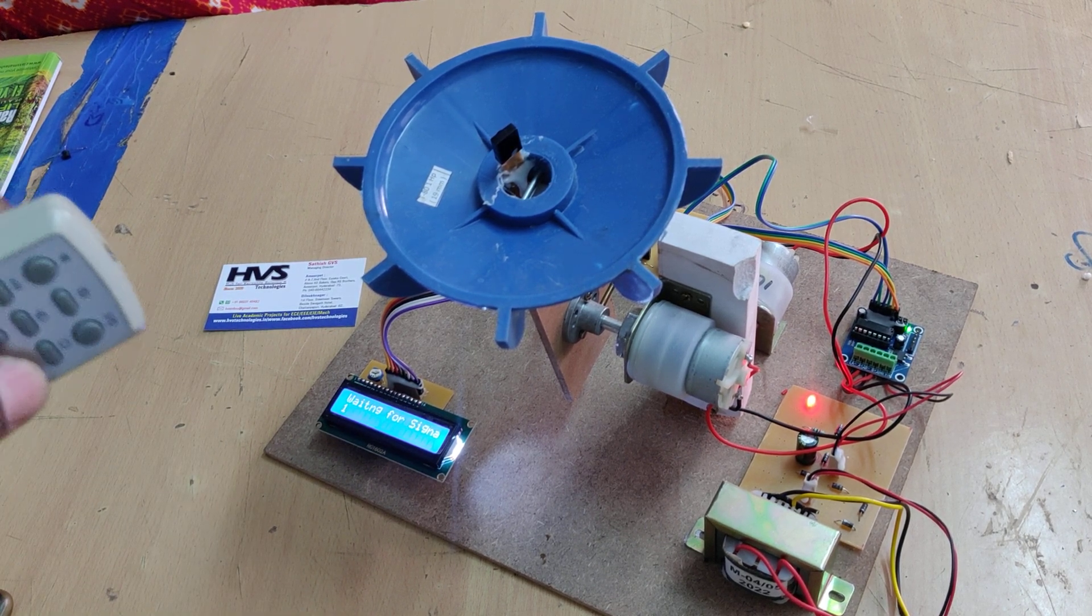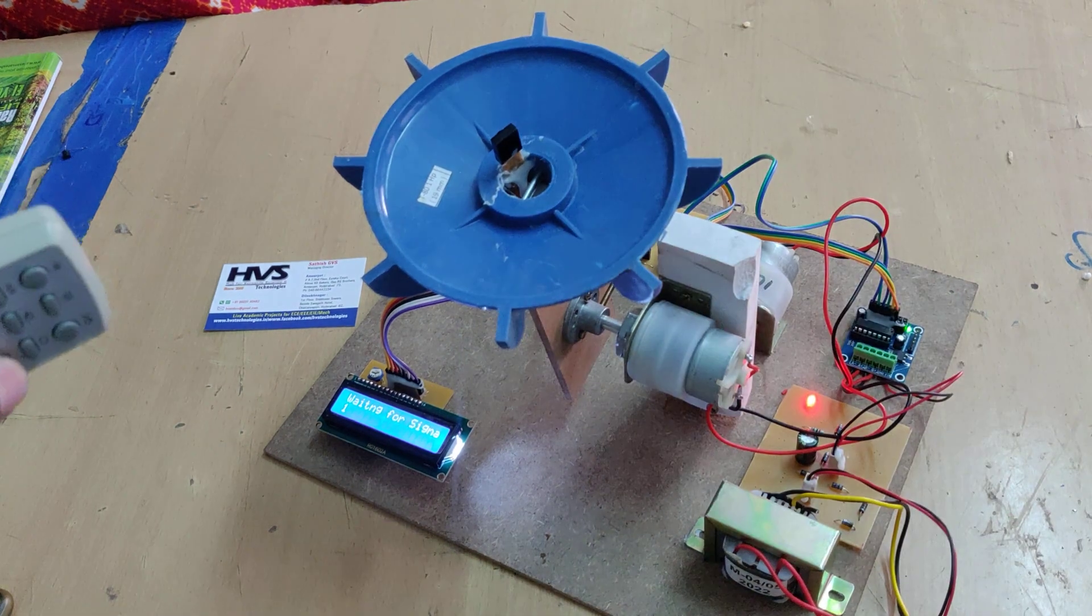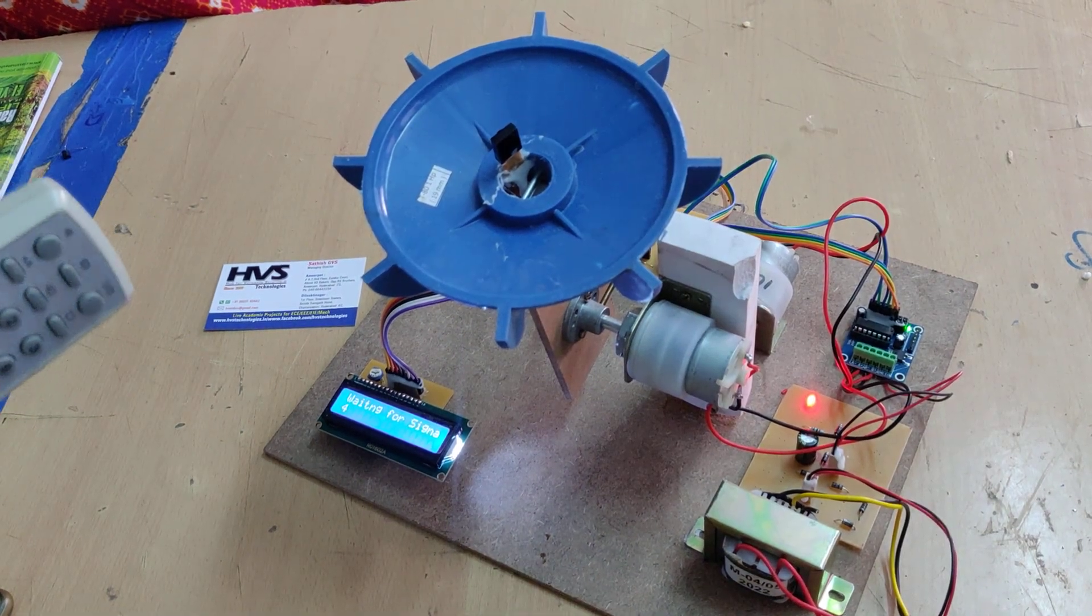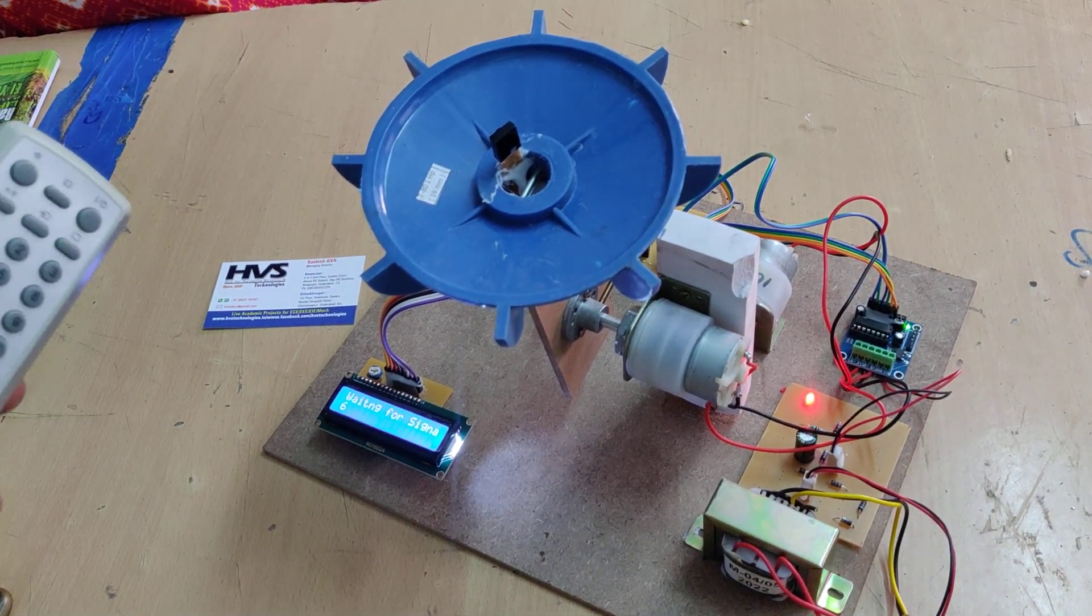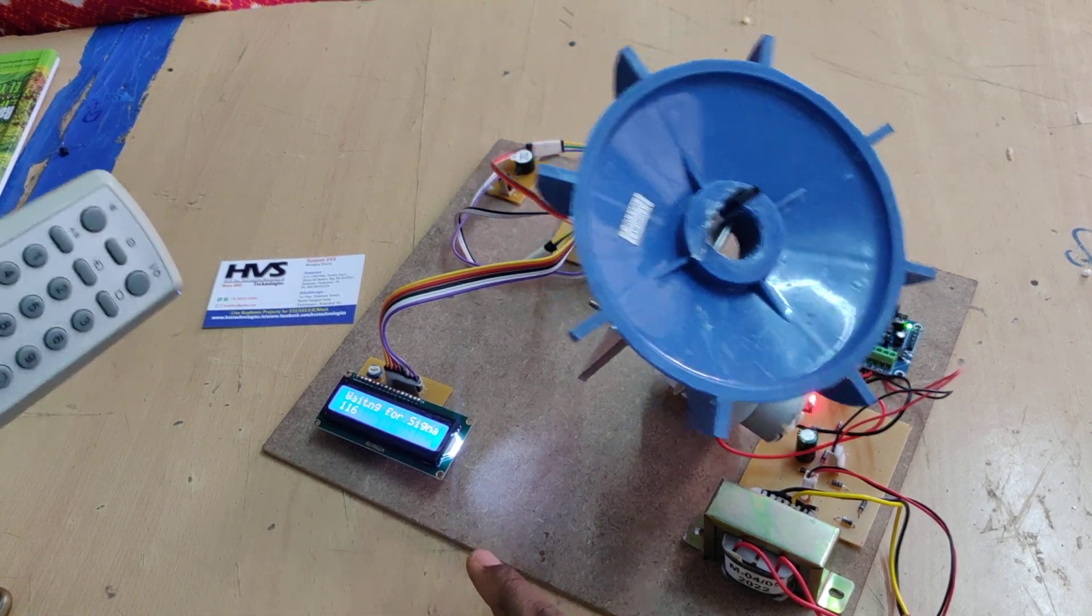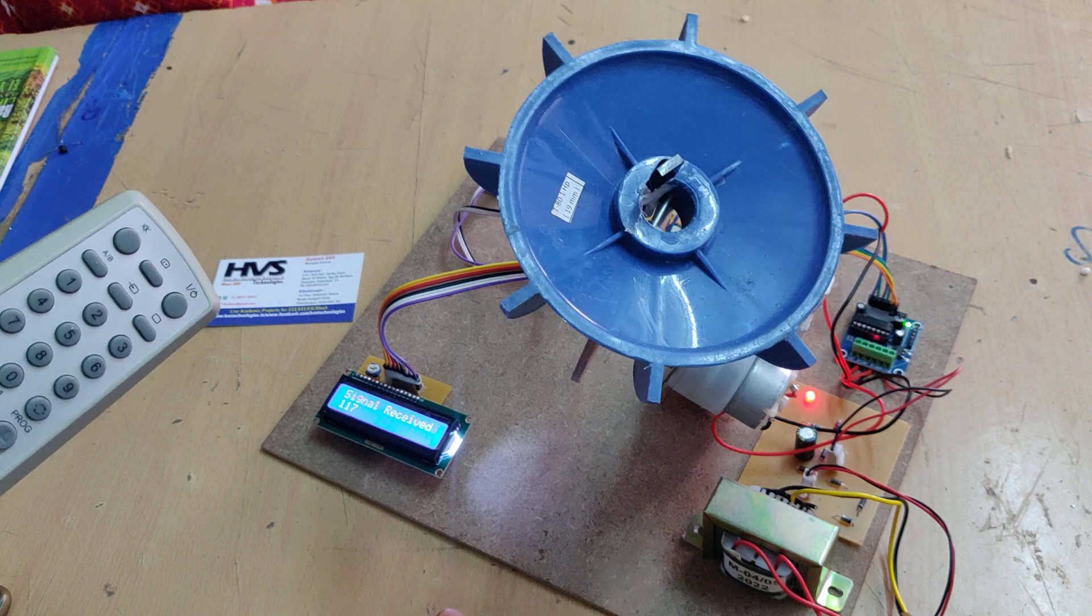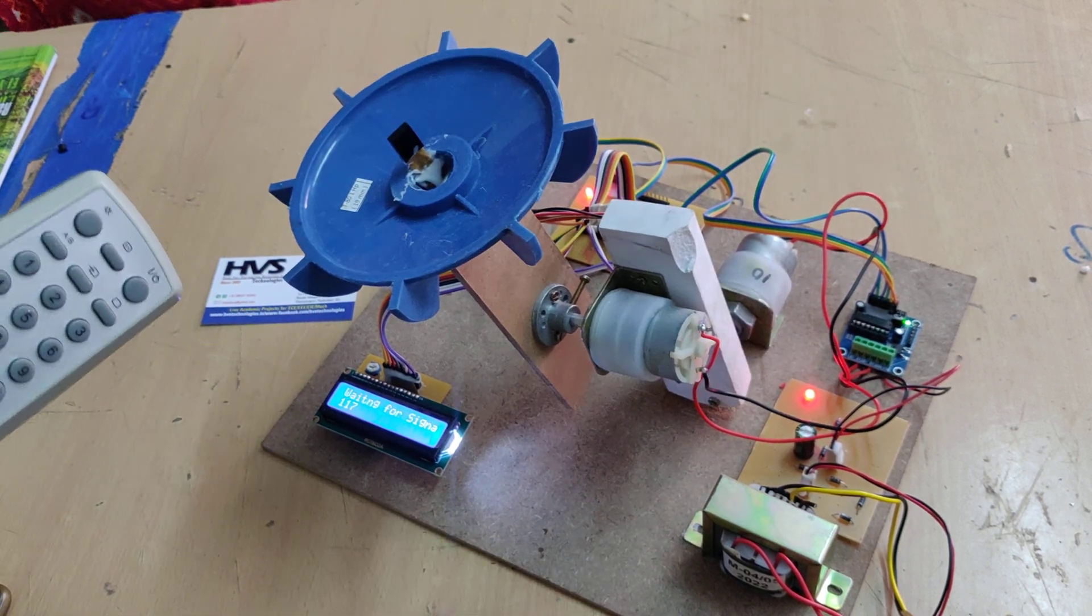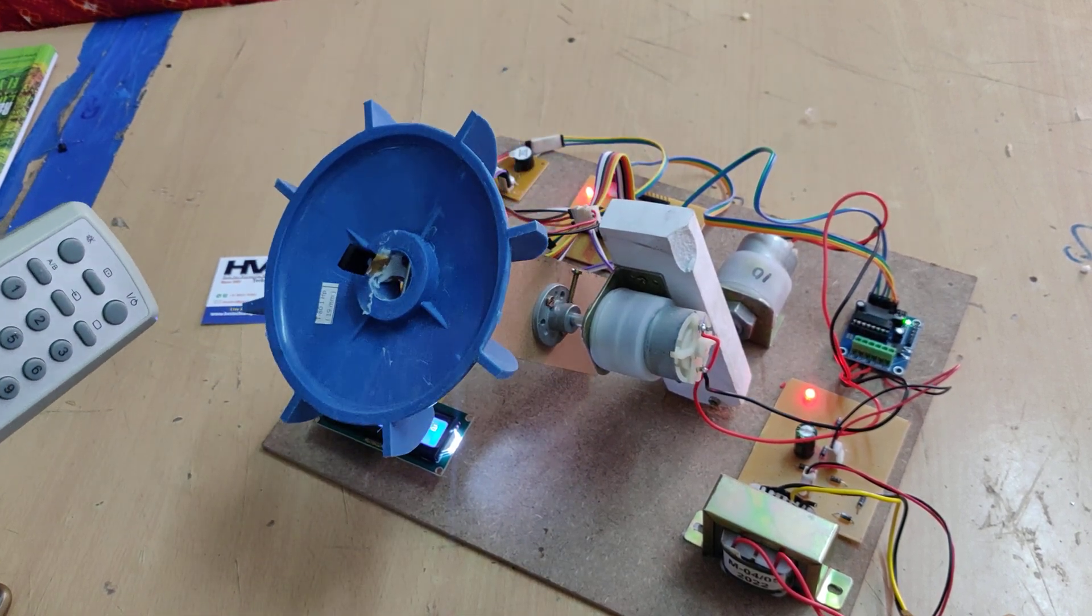By pointing the IR transmitter towards this receiver module, we can see the signals which are receiving. When we provide input to control the DC motors, we can see the received signal message on the LCD screen, and we can control the antenna positioning in four directions.